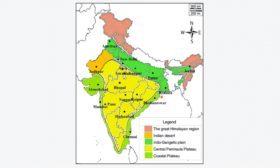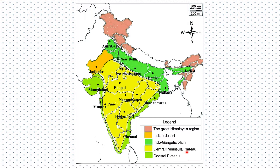Apart from these, there are two island groups that are also a part of India. They are the Lakshadweep Islands in the Arabian Sea, and the Andaman and Nicobar Islands in the Bay of Bengal, about which you are already familiar, as we have learnt about this in the last video.